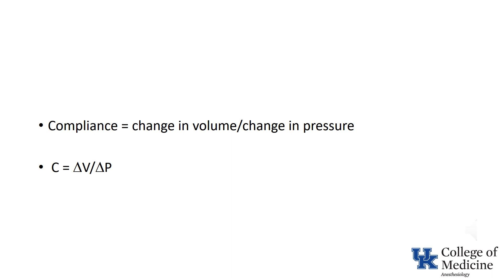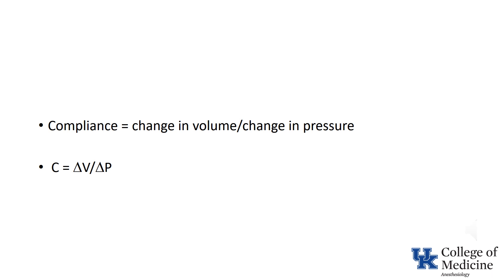Use of the peak inspiratory pressure results in a determination of dynamic compliance. Use of the plateau pressure results in a determination of static compliance. Initially, after being turned prone, the patient had a peak inspiratory pressure of 23 cm of water with a tidal volume of 800 mL. The resulting value for dynamic compliance — 35 mL per cm of water — is somewhat low compared to a normal value of 50 to 100 for patients undergoing positive pressure ventilation.